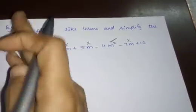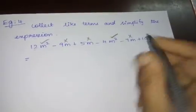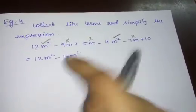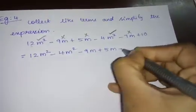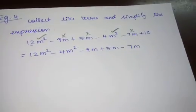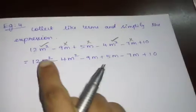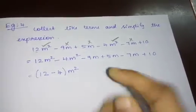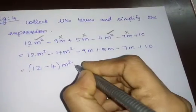This given expression is equal to the upcoming arrangement. Now I am going to arrange the like terms together: 12M² - 4M². I have arranged the M² terms together. Next: -9M + 5M - 7M — I have arranged these like terms together. Then + 10, because 10 is unlike, so I have kept it at the last. Now if like terms are there, we can put the coefficients in brackets and keep the variable outside: (12 - 4) M².